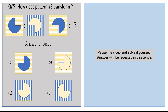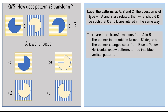Final question: if patterns 1 and 2 are related, find the missing pattern that relates to pattern 3. Pause the video. There are three transformations from pattern 1 to 2: the pattern in the middle rotated 180 degrees, its color changed from blue to yellow, and the horizontal yellow lines in pattern 1 became vertical blue lines in pattern 2.